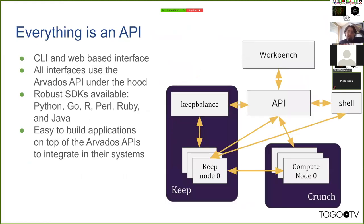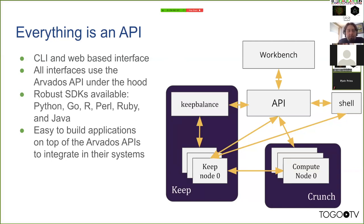As I mentioned, everything in Arvados is an API. We have a web interface — actually two web interfaces, though I'll only show you one today — and a set of command-line tools. We have SDKs in a number of languages: Python, Go, R, Perl, Ruby, and Java. Hopefully your favorite language is covered so you can start talking to Arvados very quickly.